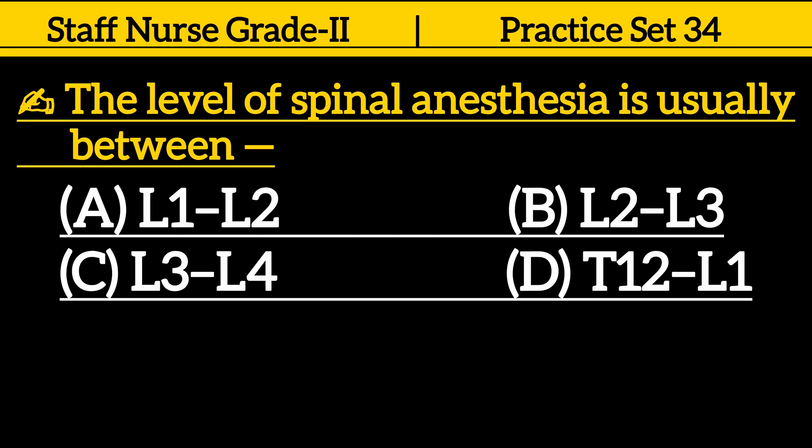Next one is, the level of spinal anesthesia is usually between: option A. L1-L2, option B. L2-L3, option C. L3-L4, option D. T12-L1.